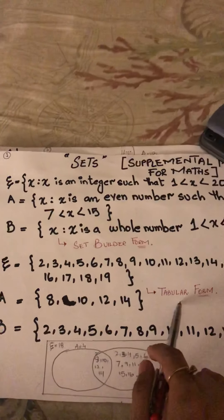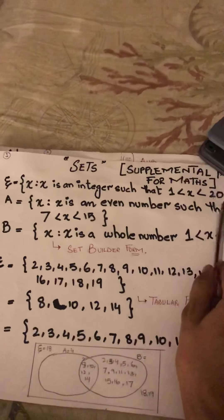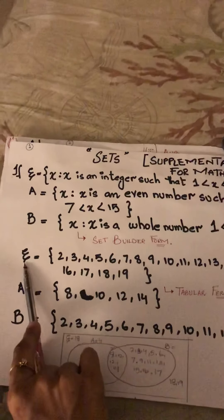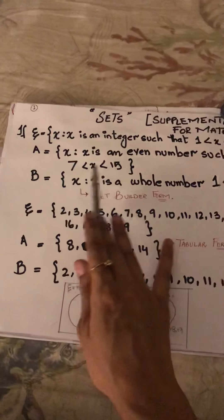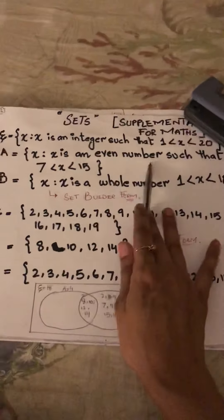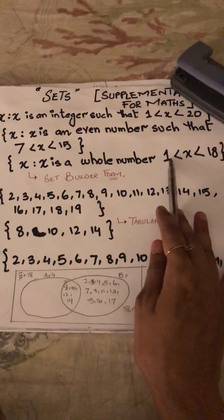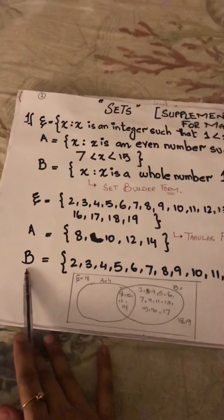In the tabular form, the numbers greater than 1 but lesser than 20 are all written in the universal set. Universal set means all the elements are present. Set A contains even numbers greater than 7 but lesser than 15 — therefore 8, 10, 12, and 14. Set B contains numbers greater than 1 but lesser than 18 — therefore 2 through 17.